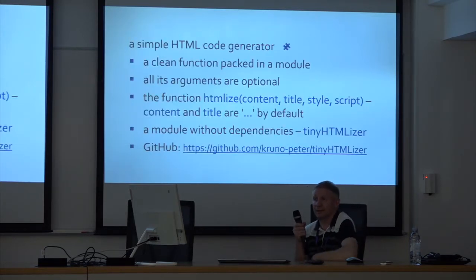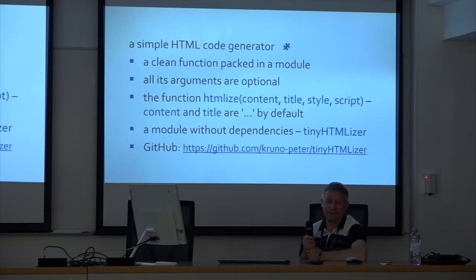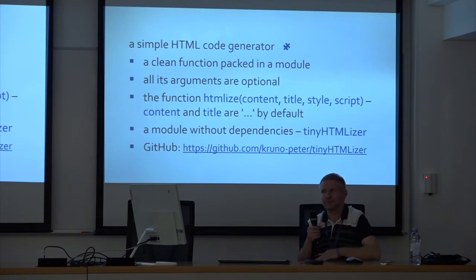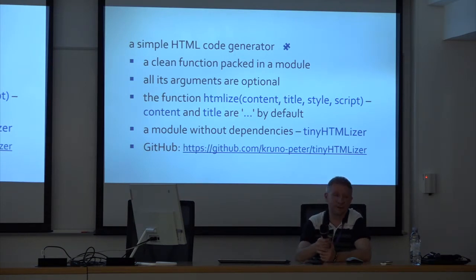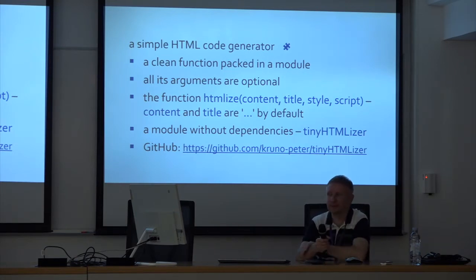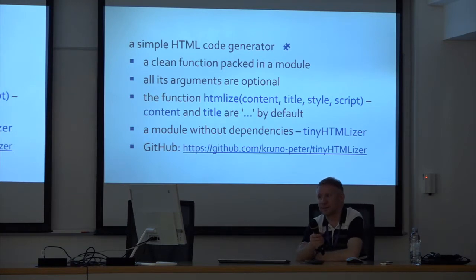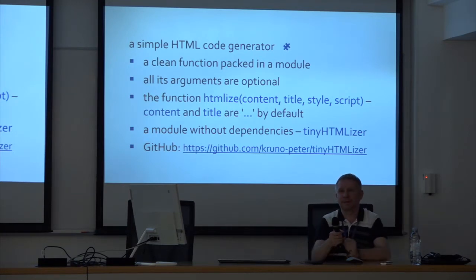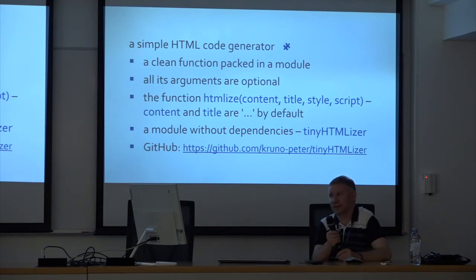Look at my simple HTML code generator. It's a clean function packed in a module. All its arguments are optional. The function called HTMLize has four arguments: content, title, style, and script. Content and title are dots by default. It's a module without dependencies. I called it tinyHTMLizer — you can find it on GitHub.